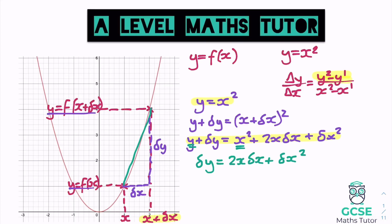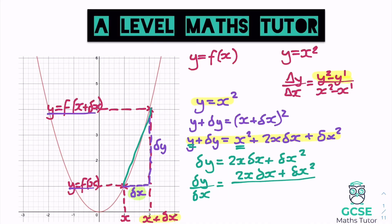That's our expression for delta y, the change in the y coordinate. When it comes to differentiation we take the change in y and divide it by the change in x — delta x. So we divide the expression by delta x: we have (2x·delta x + delta x squared) divided by delta x. Simplifying, delta x cancels with the first term and reduces the power on the second, leaving us with delta y over delta x equals 2x plus delta x.